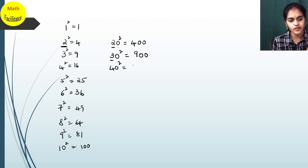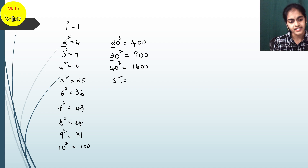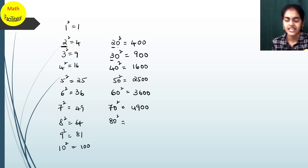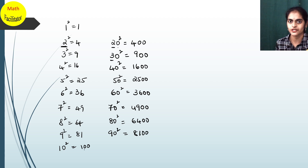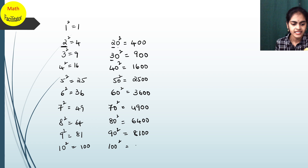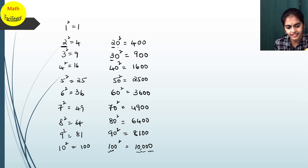What is 40²? 4² = 16 and you have 2 zeros, so 1600. 50² — 5² = 25 and 2 zeros, so 2500. 60² — 6² = 36 and 2 zeros, so 3600. 70² — 7² = 49 and 2 zeros, so 4900. 80² — 8² = 64 and 2 zeros, so 6400. 90² — 9² = 81 and 2 zeros, so 8100. And 100² = 10,000 — 10² = 100 and 2 zeros, the same pattern.